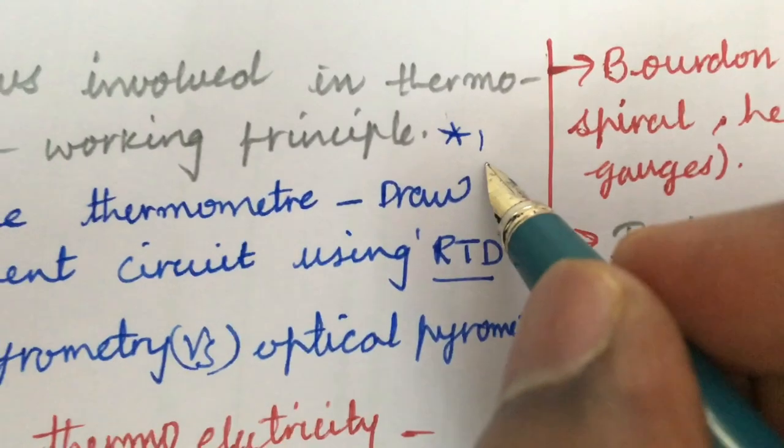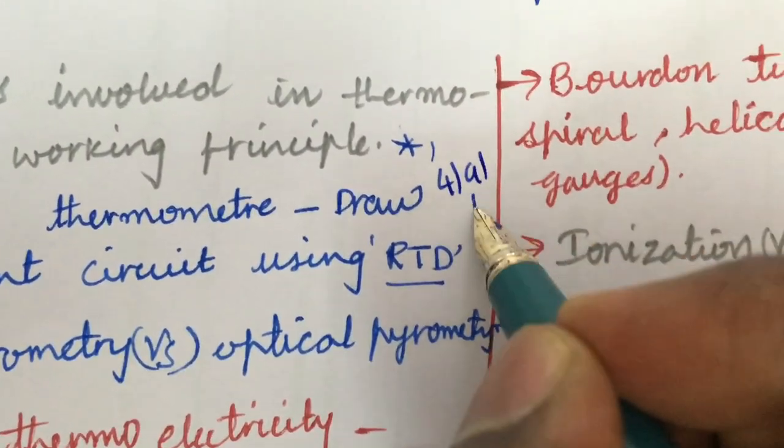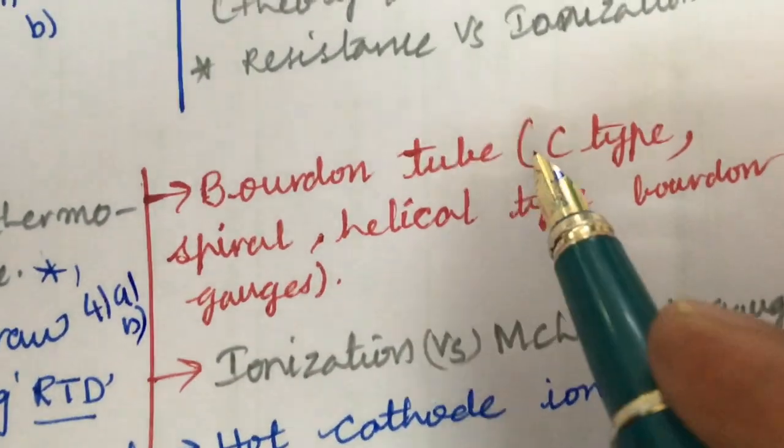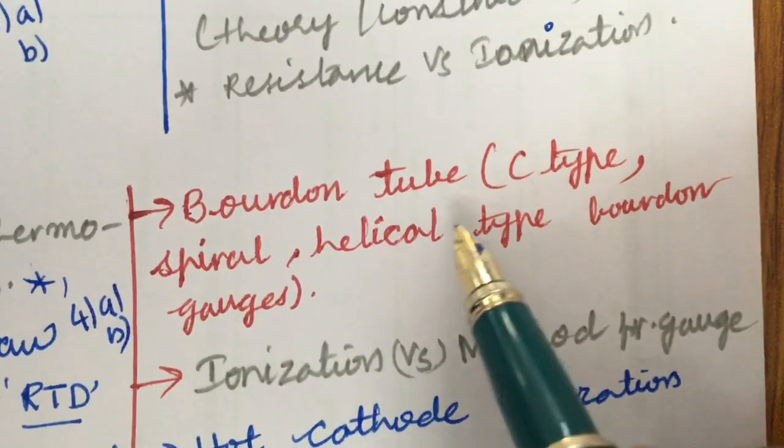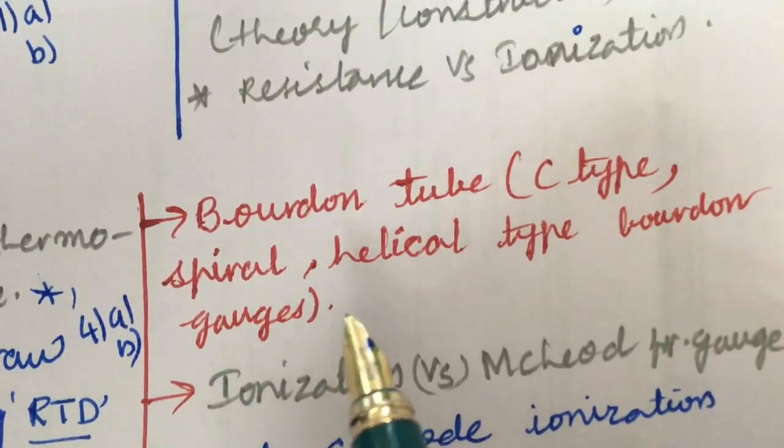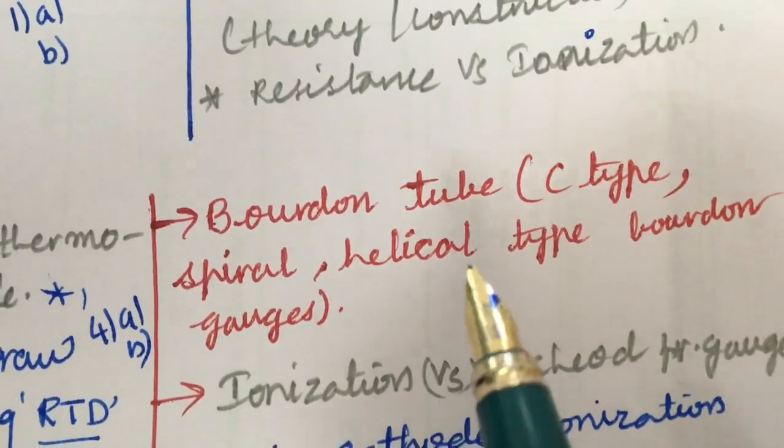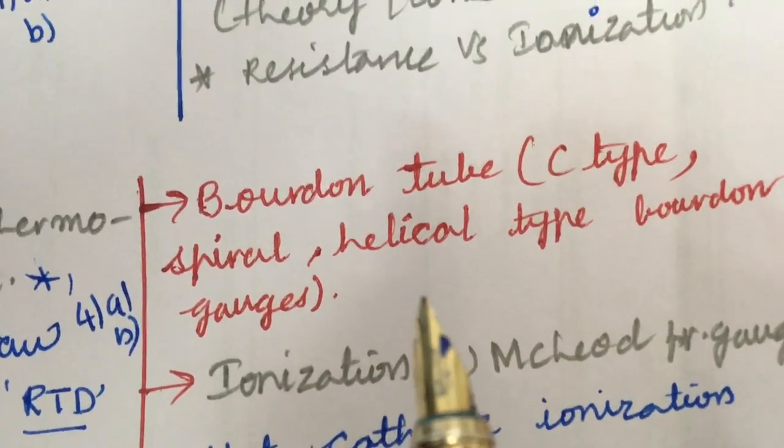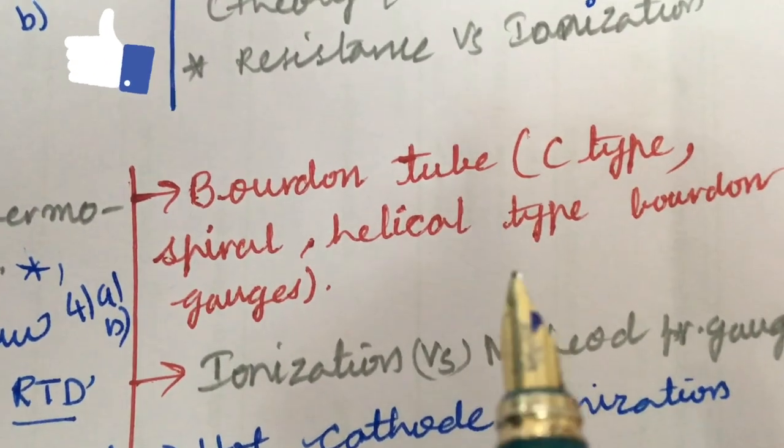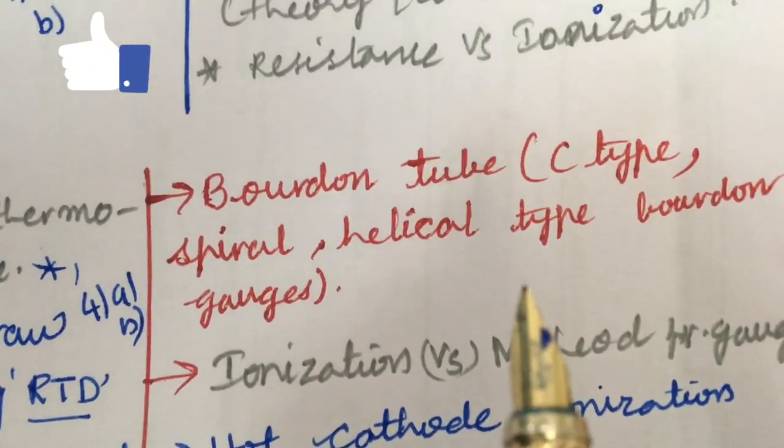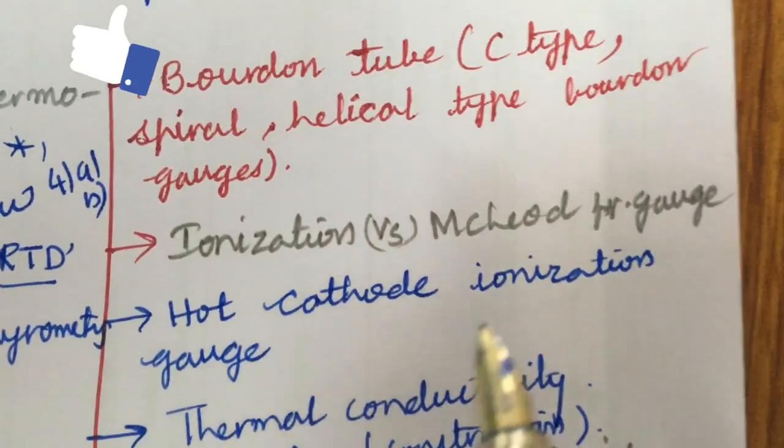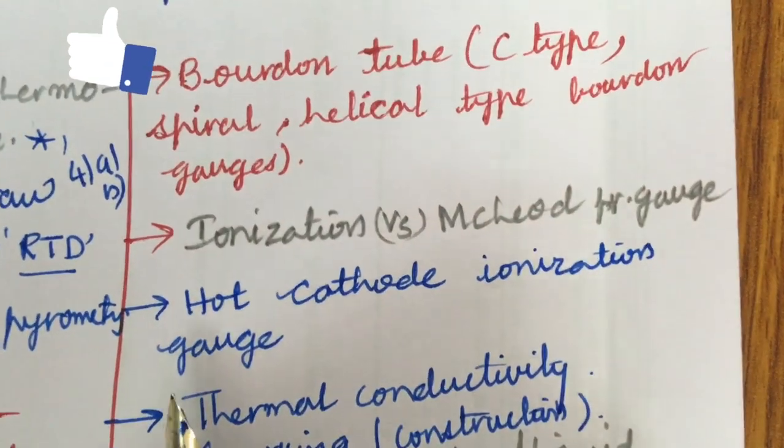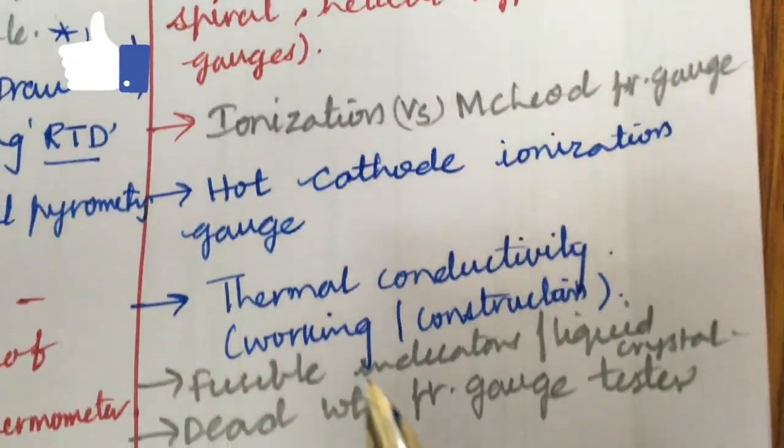Next, the Bourdon tube. I mean from this part we can expect 4A as well as 4B. Bourdon tube C type, spiral, helical type and Bourdon tube gauges. Dear students, please do work out each and every diagram very neatly and you need to understand and you should be able to label all the parts of the diagram, then only you could be able to work out this course.